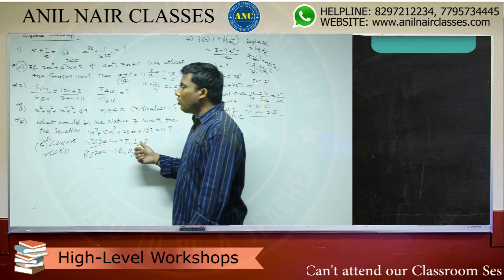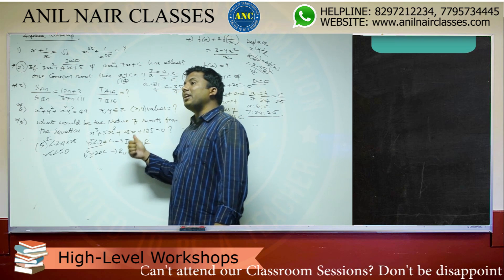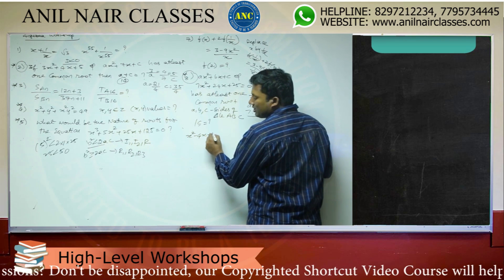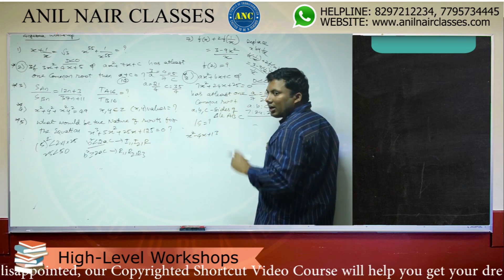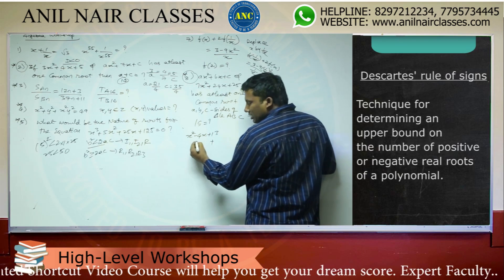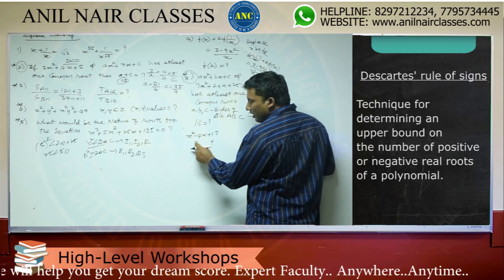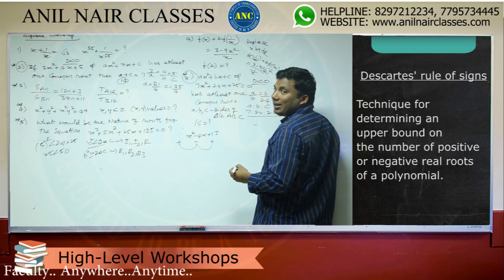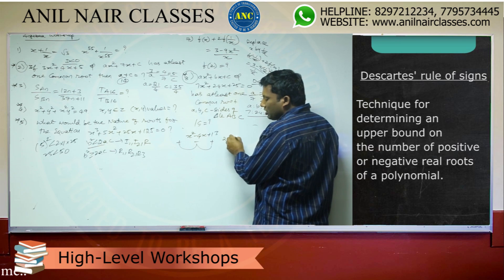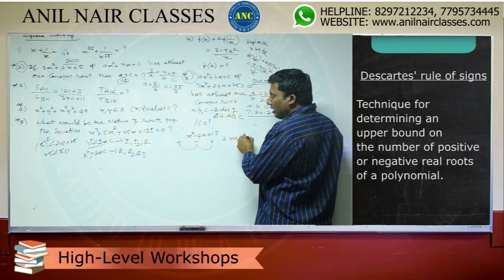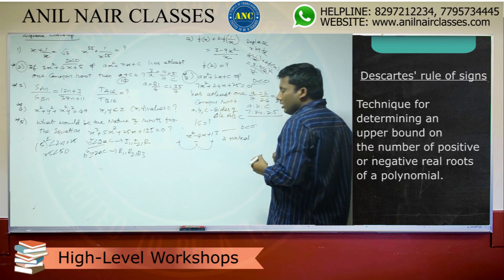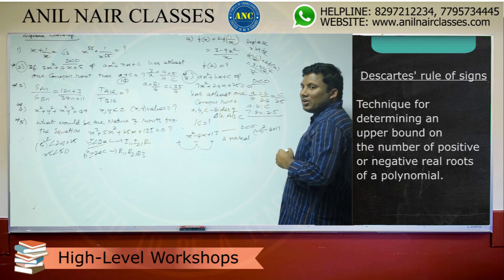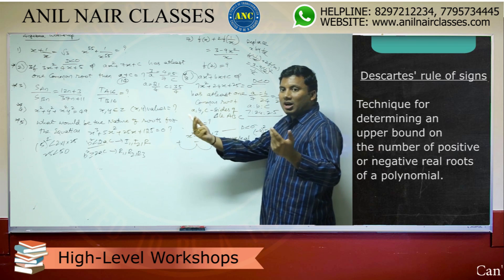Generally, Descartes' rule of signs is used only after the discriminant is evaluated. For example, take x² − 4x + 30. If I apply Descartes' rule: positive to negative is one sign change, negative to positive is another — two sign changes, suggesting two positive real roots. However, d is less than 0, meaning b² less than 4ac, so the roots are imaginary.